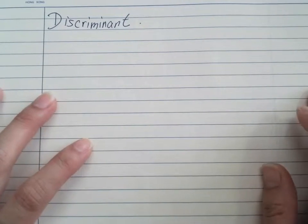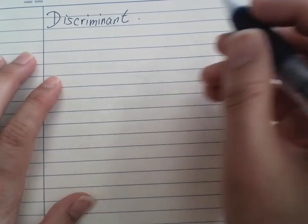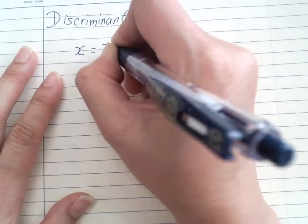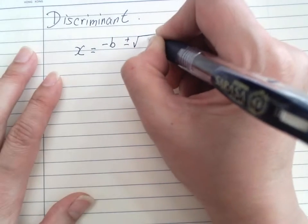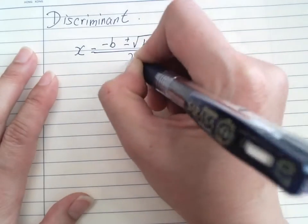Right, now we're going for the discriminant. Before we get into the discriminant, I want to go back to the quadratic formula: x equals negative b plus or minus square root b squared minus 4ac over 2a.